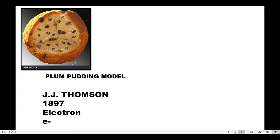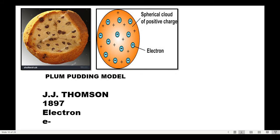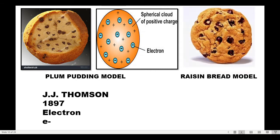Since plums and puddings are not commonly known in the Philippines, the raisin bread model is used. Imagine a bread with raisins — the raisins are the negatively charged particles (electrons), and the bread itself represents the positive charges. This is also called the chips ahoy cookie model here — the chocolate chips or raisins represent electrons, and the bread or cookie itself represents the positive charge surrounding them.